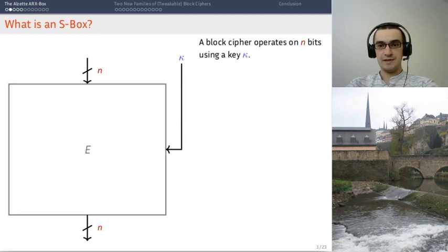First, what is an S-box? This is a block cipher. It operates on n bits and it has a key kappa of a fixed length. N is usually 128 or in our case you will see 64 or 256.